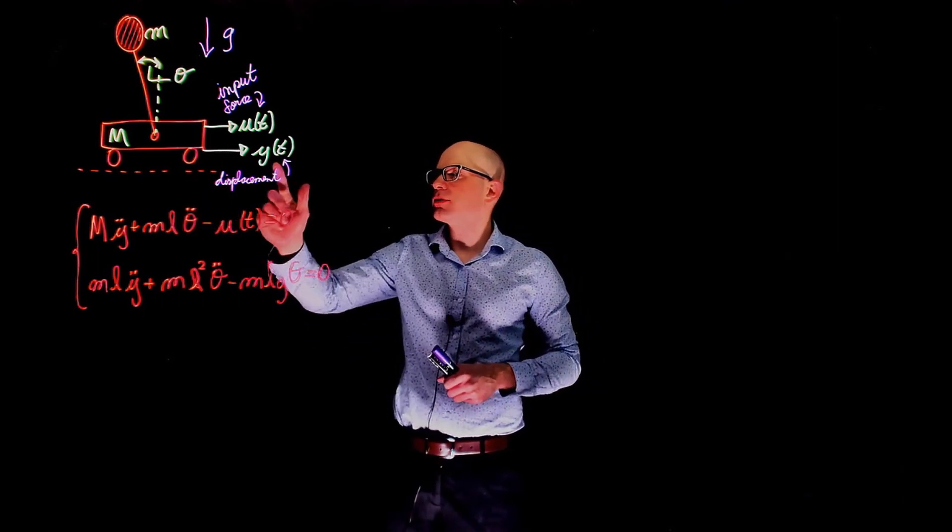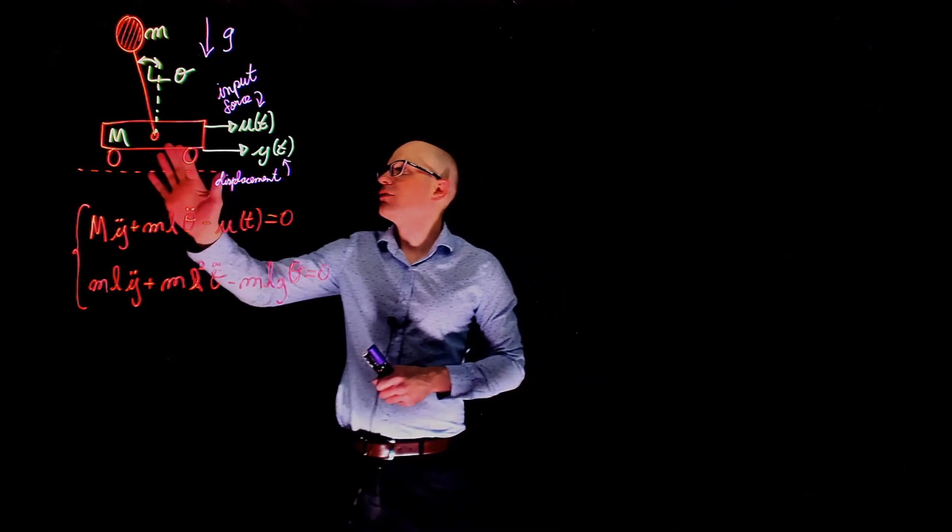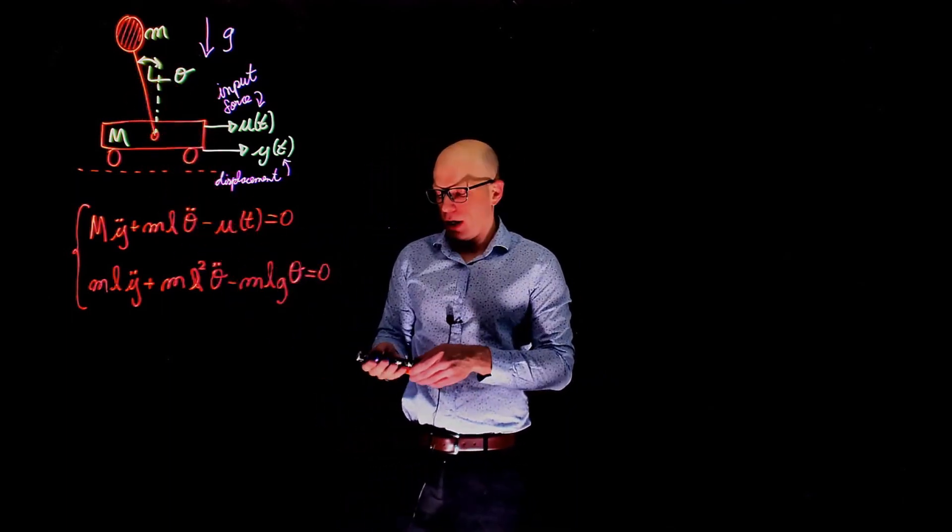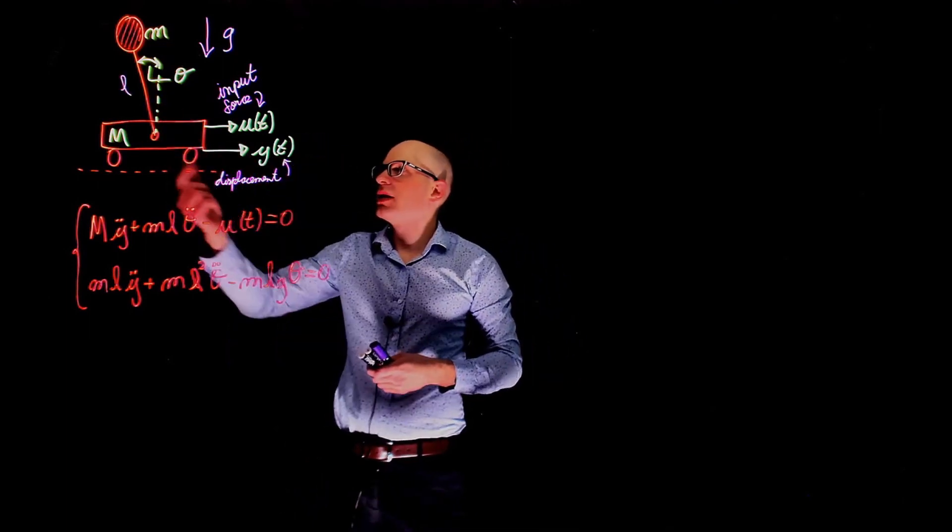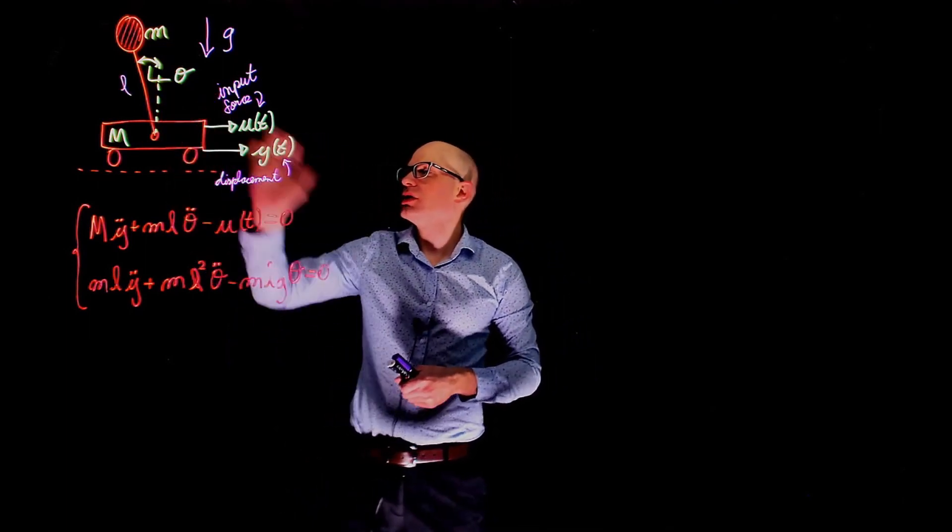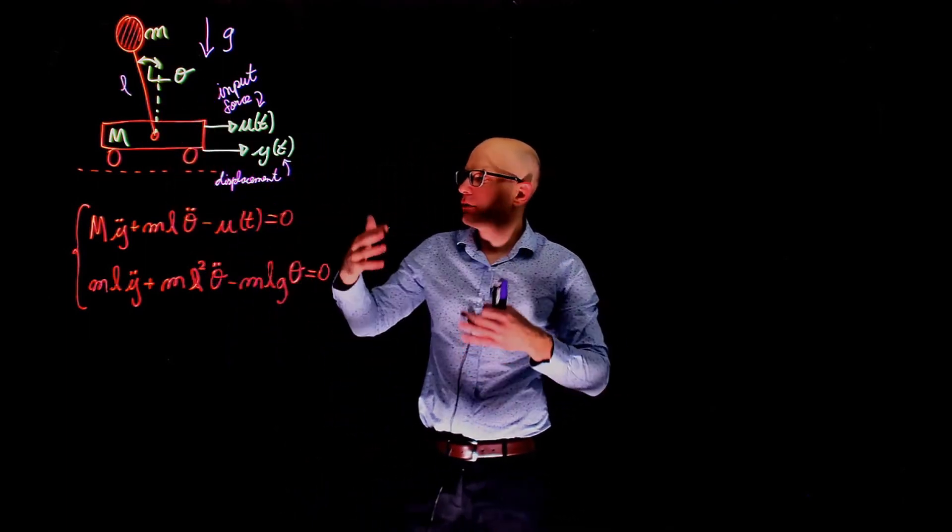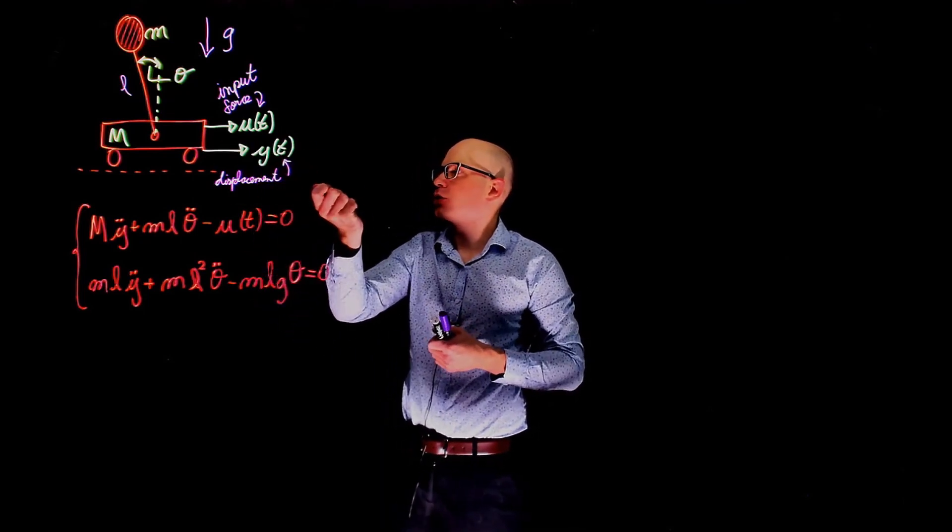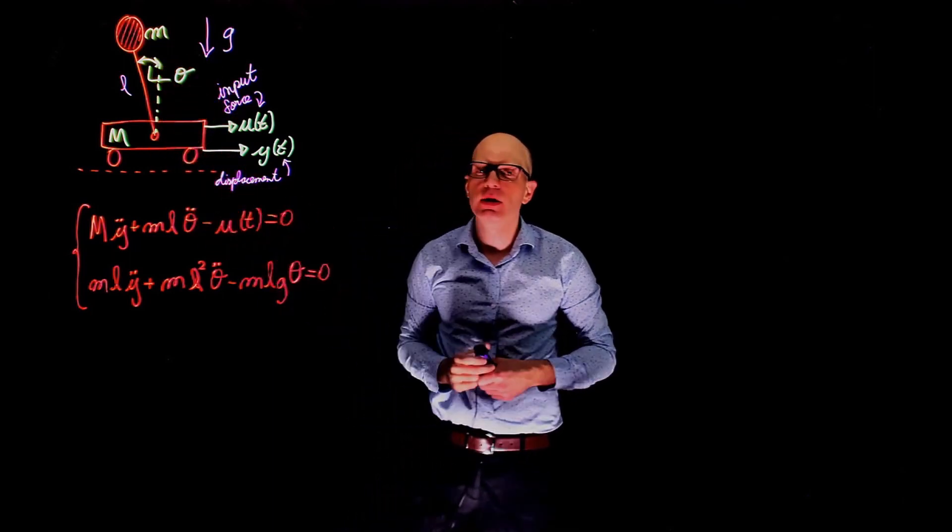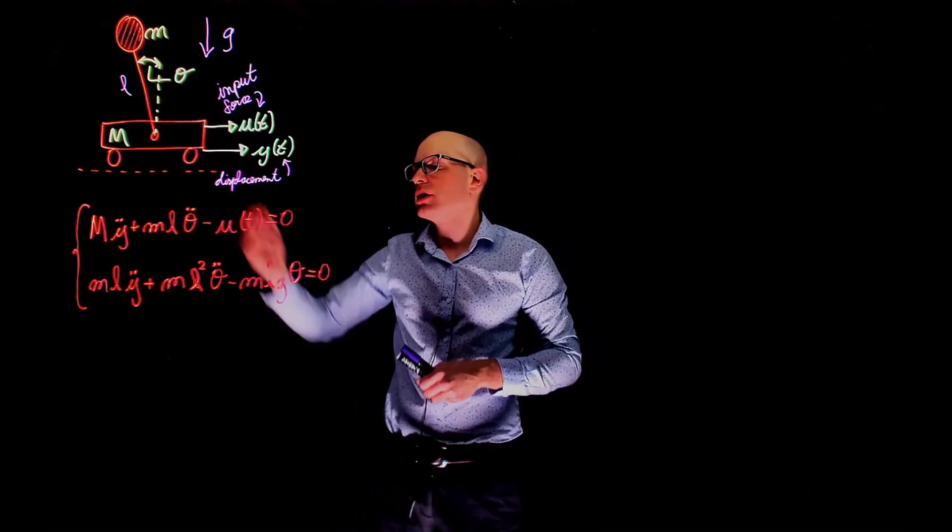We apply a force u of t to the cart. The displacement of the cart is y of t. And we have here the pendulum that has a bob whose mass is m. L is the length of that link and the angle here is theta. The objective of an inverted pendulum is to apply this force u of t in a controlled manner such that the pendulum is kept in the upright position. That is theta is zero.